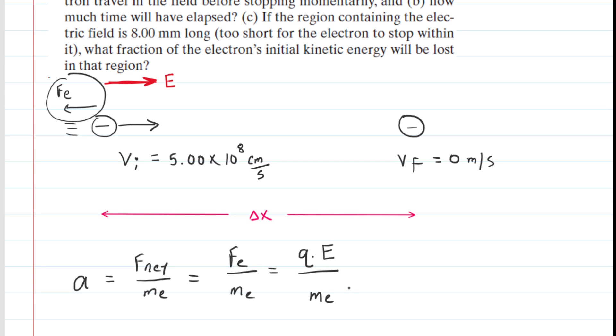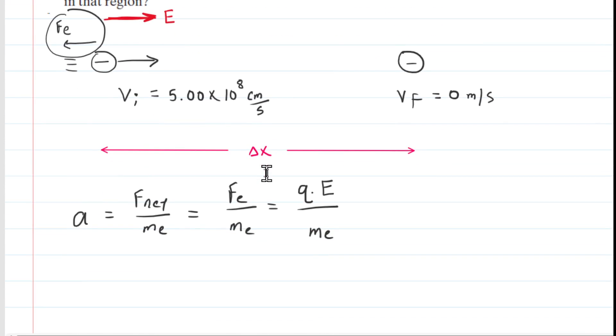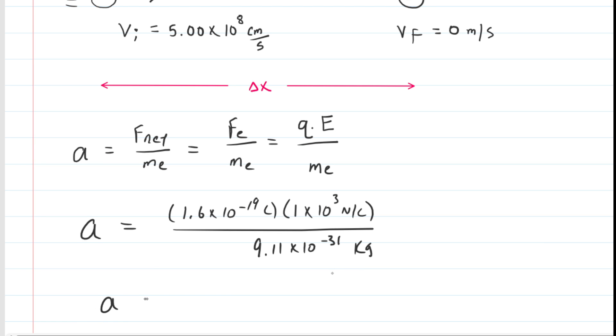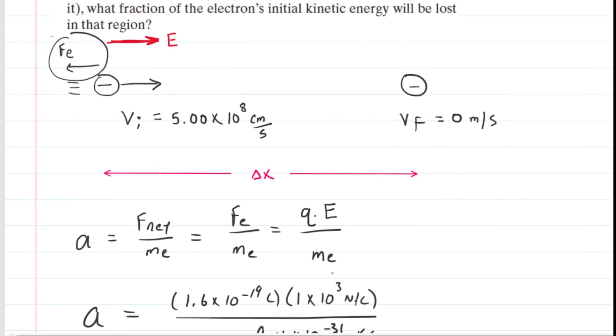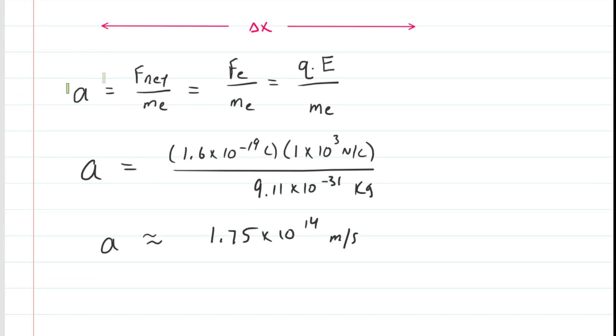Now we'll go ahead and fill in the known values. The question gave us the electric field magnitude right here, and then the charge and mass of an electron are known values. And when we compute this, we get an acceleration magnitude of about 1.75×10¹⁴. That's going to be in meters per second. But remember, the electric force in our picture was actually pointing to the left, so we're going to assign a negative to our acceleration because the acceleration would also be pointing to the left. Remember, the force and the acceleration point in the same direction. So that's our acceleration.